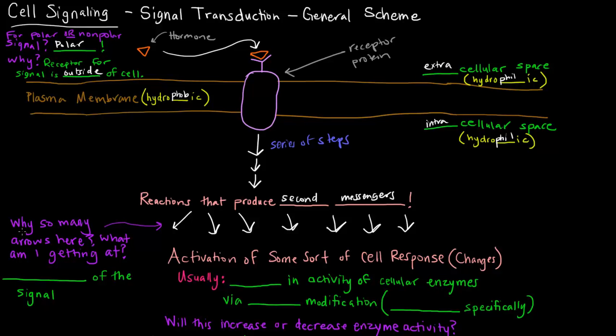Why so many arrows here? I'm getting at the fact that there's a bunch of these second messengers that are created. And more specifically I'm getting at the fact that a large amount of second messengers amplifies the signal. One hormone binding event creates many second messengers.